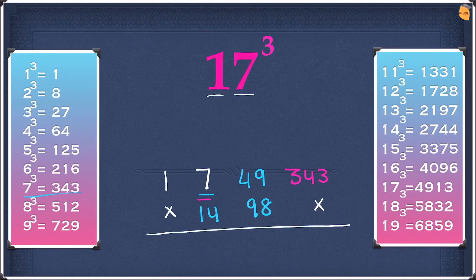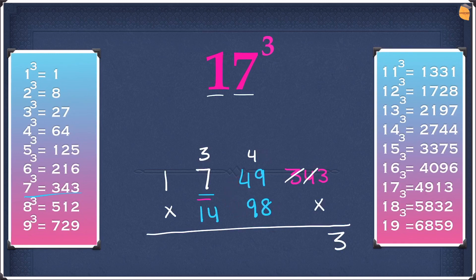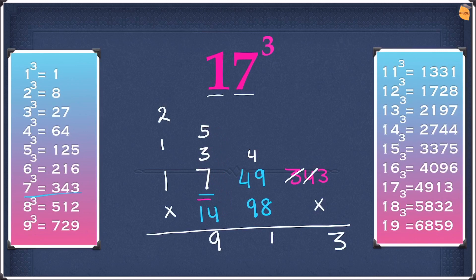Now add these up — when adding you can only have one digit and all the other digits must be remainders. So write the 3, take the 4 as a remainder and take the 3 as a remainder. So 90 plus 40 is 130, plus 8 is 138, plus 9 is 147, plus 4 is 151. So write the 1, take the 5 as a remainder and the other 1 as a remainder. Now add these numbers up: 14 plus 7 is 21, plus 3 is 24, plus 5 is 29. So write the 9 and take the 2 as a remainder. 2 plus 1 is 3, and 3 plus 1 is 4. So write the 4. The answer is 4913 as you guys could see right here.